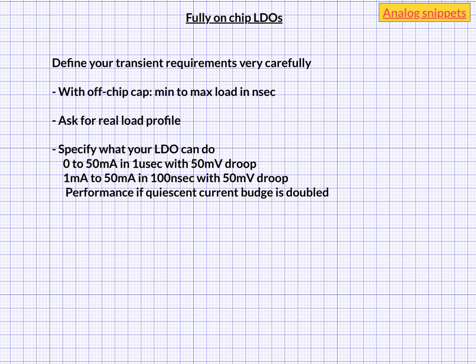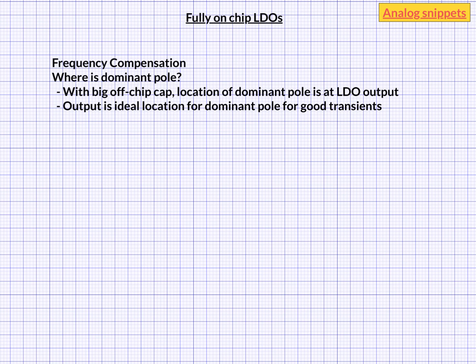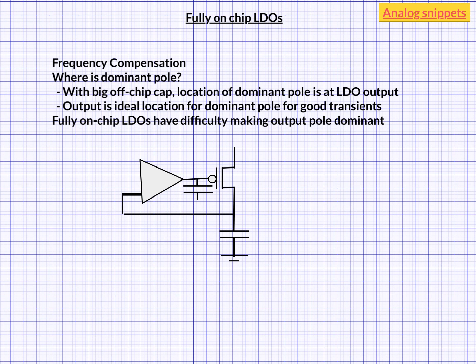Let's now look at frequency compensation. The large off-chip cap defines the dominant pole in conventional topologies. From a transient performance perspective, the output pole is the ideal location for the dominant pole. But for fully on-chip LDOs, it's very difficult to put the dominant pole at the output. To understand why, let's compare the relative magnitudes of the two poles. Poles are defined by the product of node resistance and capacitance. Let's assume we have about 100 pF capacitance at the output, which is a typical value, and the gate capacitance is of the order of 1 pF.